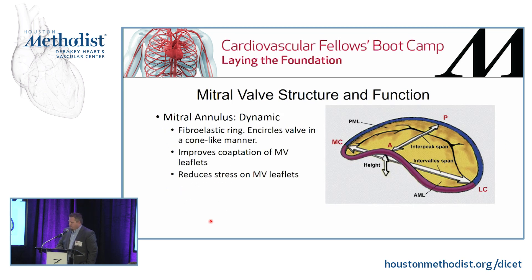The mitral valve has been described as resembling a papal mitre, and the valve itself has a saddle structure — like a Pringle. The inner peak spans from posterior to anterior as the high point, with the anterior leaflet anteriorly and the posterior leaflet wrapping around. The intervalley span is typically about 5 centimeters in diameter, with 4 centimeters in the anterior-to-posterior dimension.